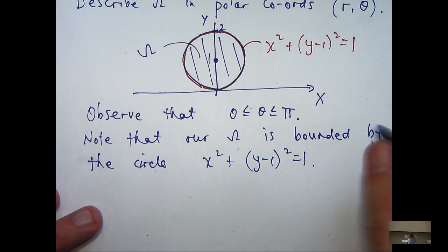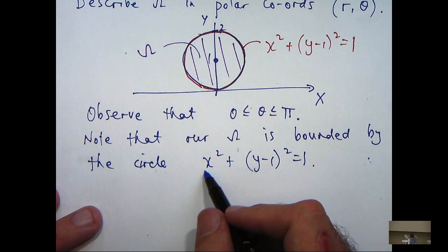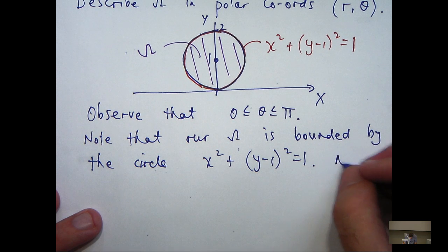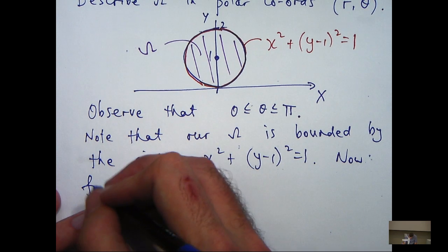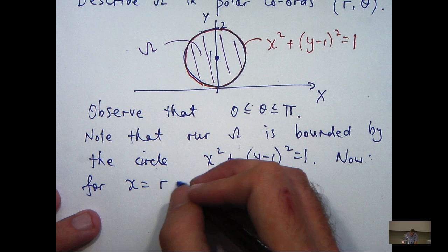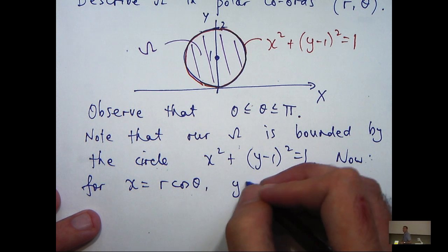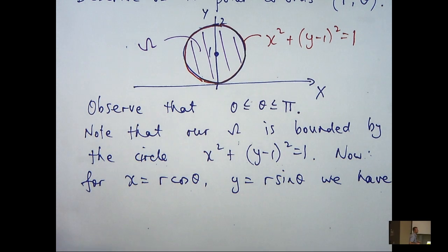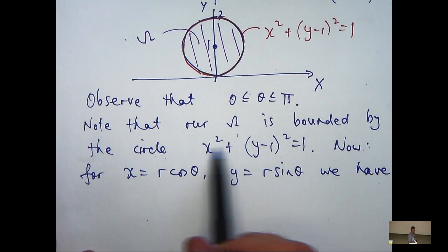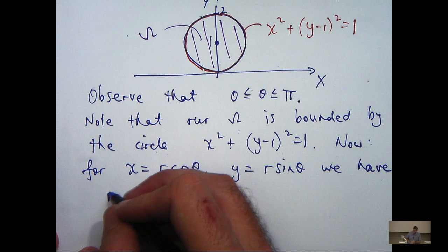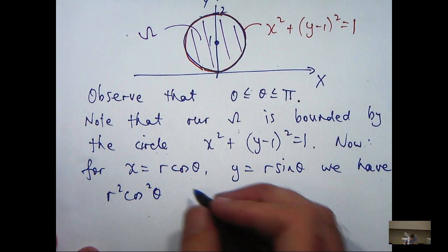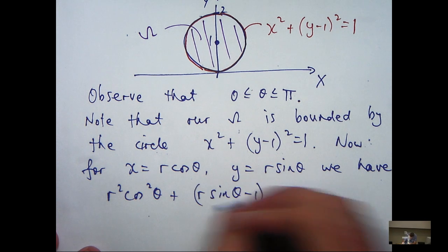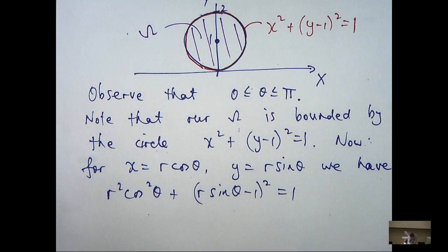So, what I'm going to do is make a substitution: x equals r cos theta, y equals r sine theta. So just substituting in, I'll get r squared cos squared theta plus r sine theta minus 1 all squared equals 1.